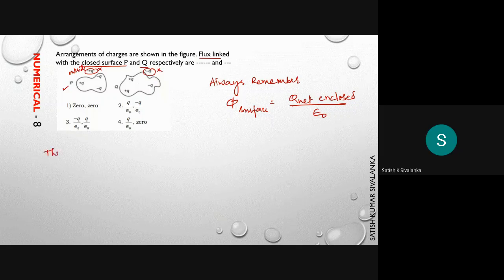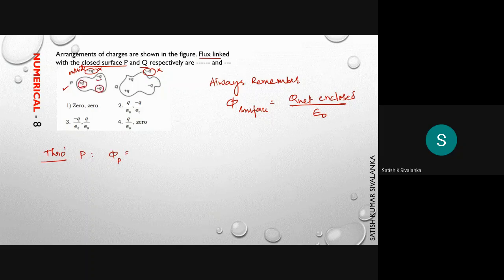So through the surface P, flux through P equal to net charge plus Q, minus Q, minus Q, one plus Q. One plus Q and one minus Q get cancelled. You will get minus Q by epsilon 0.